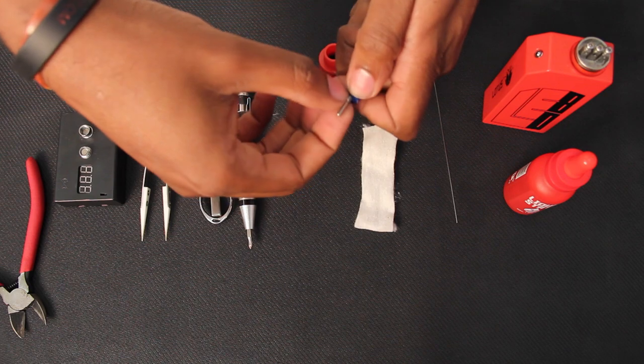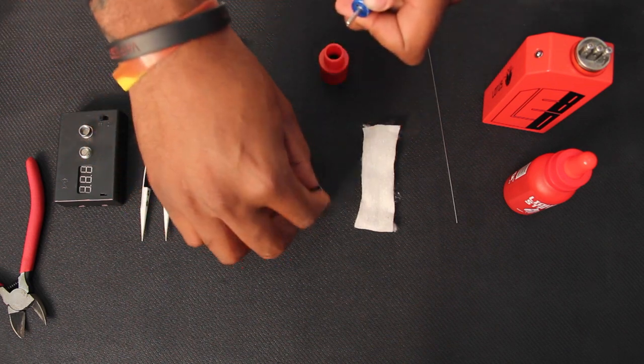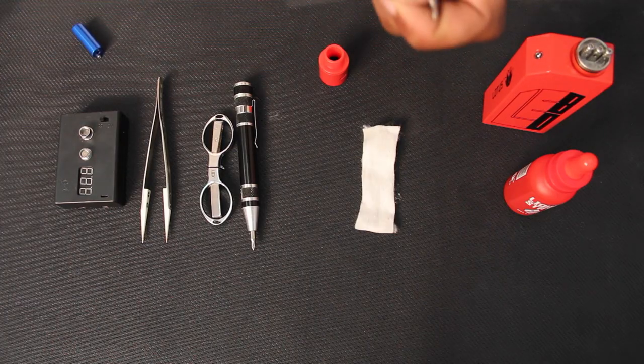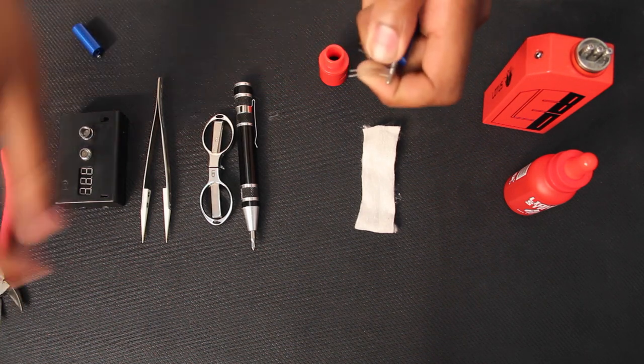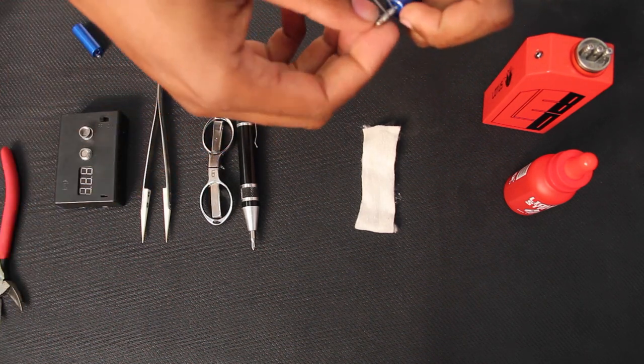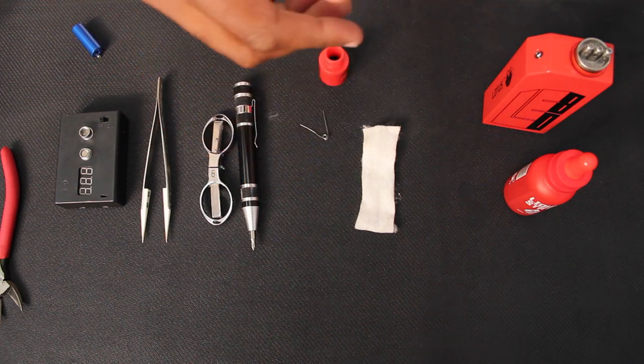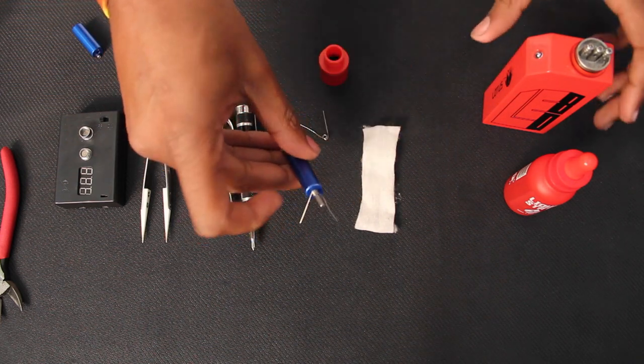And then to save time, guys, we're already going to have that other coil already built. So then what you want to do is you just want to make sure all your leads are matched up and then you want to insert them into your RDA.